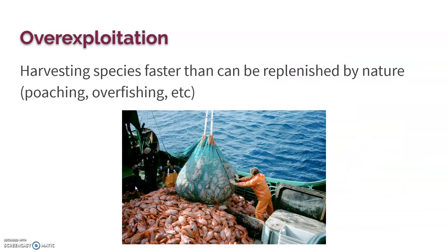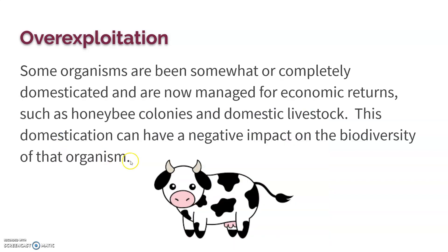Over-exploitation includes over-harvesting, poaching, over-fishing, and deforestation. If we harvest faster than nature can replenish, that's over-exploitation. Domestication is also a form, because we've selectively bred certain species, decreasing their biodiversity and making them dependent on us. Since we manage them for economic returns, they struggle to survive in the wild because we've depleted the genetic diversity of that species.